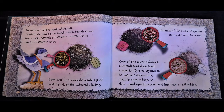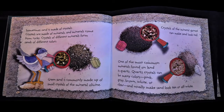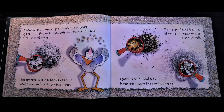Sometimes sand is made of crystals. Crystals are made of minerals, and minerals come from rocks. Crystals of different minerals form sands of different colors. Green sand is commonly made of small crystals of the mineral olivine. Crystals of the mineral garnet can make sand look red. One of the most common minerals found on land is quartz. Quartz crystals can be many colors — pink, gray, brown, white, or clear — and usually make sand look tan or off-white.